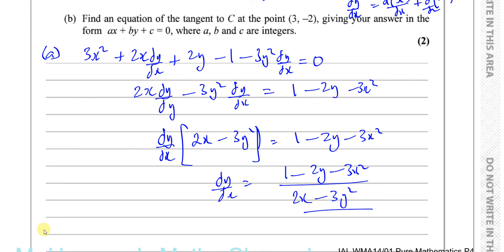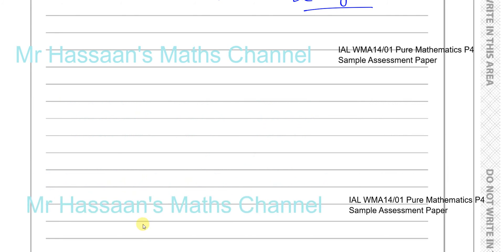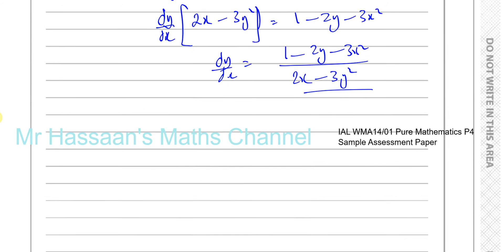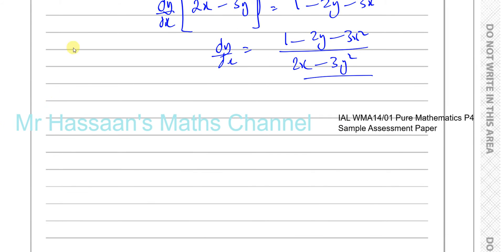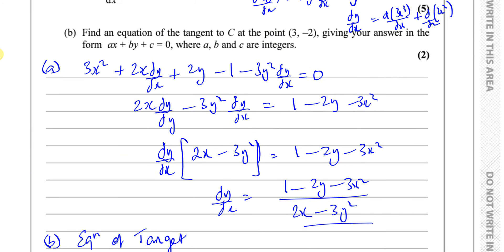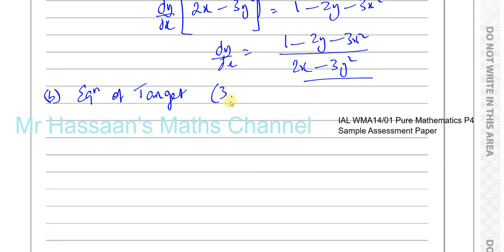For part B, we need to find an equation of the tangent to C at the point (3, −2), and leave the answer in the form Ax plus By plus C equals 0 with all integer coefficients.